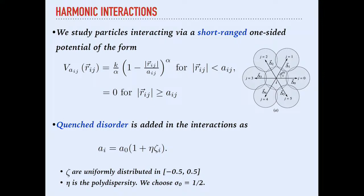For these distance-dependent interactions, if R_ij — the distance between particles — is greater than A_ij, the sum of the radii of the two particles, you have zero interaction. But if there is a slight overlap, the harmonic interaction turns on. You can start with a crystalline configuration and add a little bit of disorder in the radii of particles. A_ij is basically the radius of every particle, and you can add disorder at every site using a small uniform distribution, tuning the amount by a polydispersity parameter.